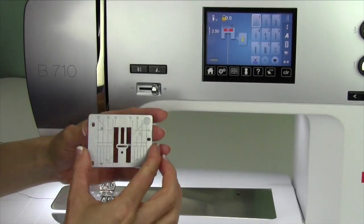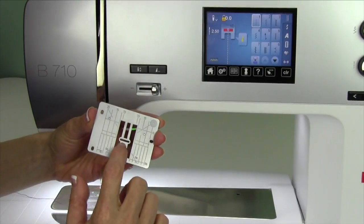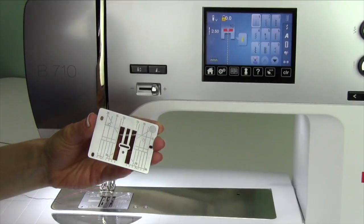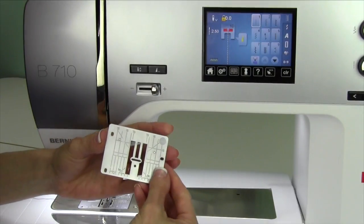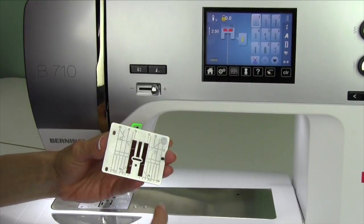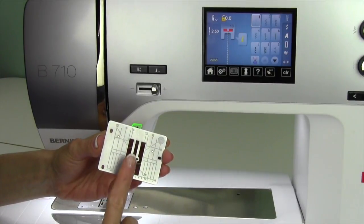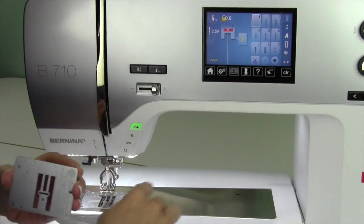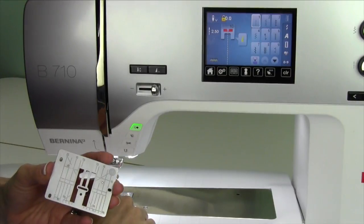You'll notice here on a regular throat plate, that big wide opening sometimes can suck fabrics in there if they're very lightweight, or even if you're starting on a piece of fabric where you're starting on the corner, and that corner zips down there. A straight stitch throat plate will help that immensely.